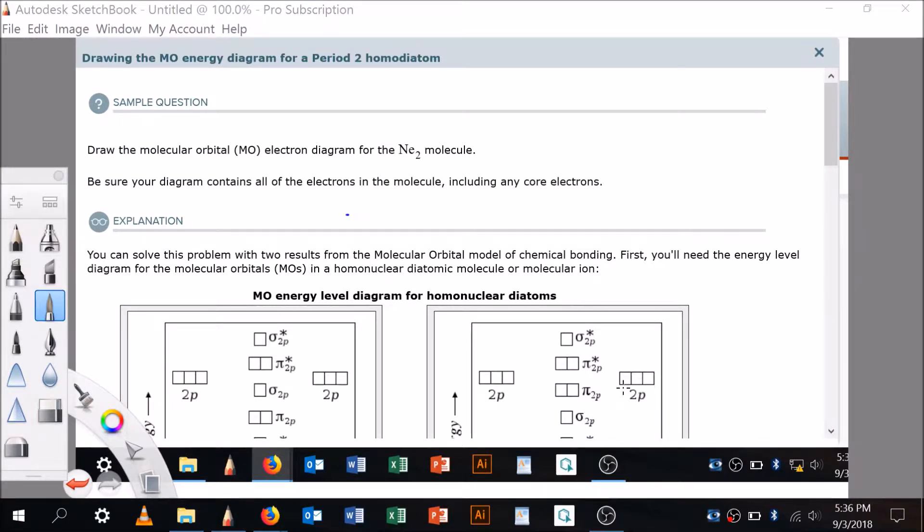Okay, so here's another video on request. A student asks for a video regarding drawing the MO energy diagram for period 2 homodiatomic molecules. Period 2 includes boron, carbon, nitrogen, oxygen, fluorine, and neon, as well as lithium and beryllium.